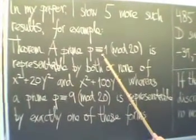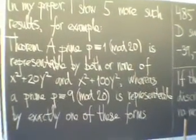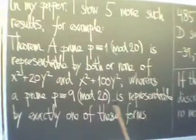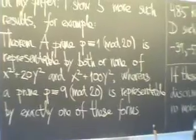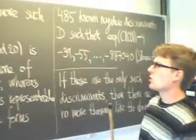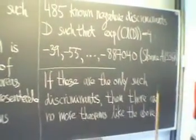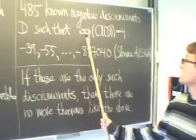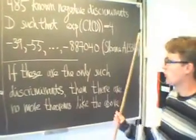In order to prove such theorems, one has to look for negative discriminant D, such that the exponent of the class group of D is equal to 4.